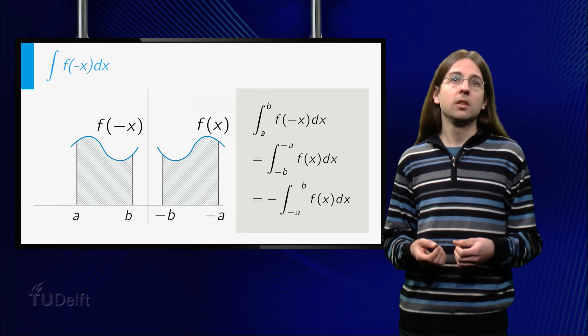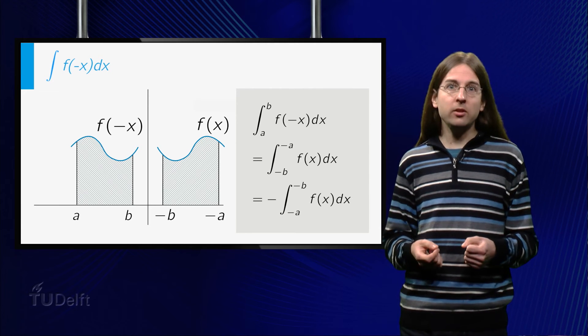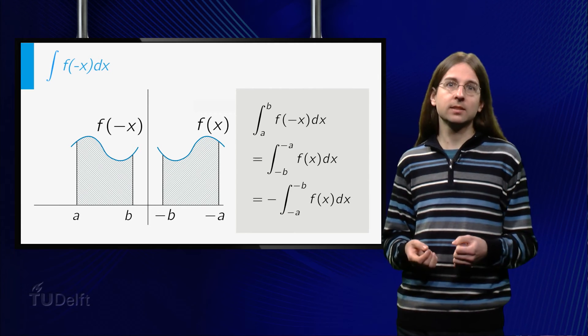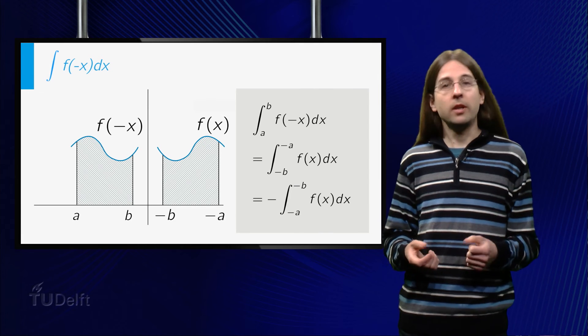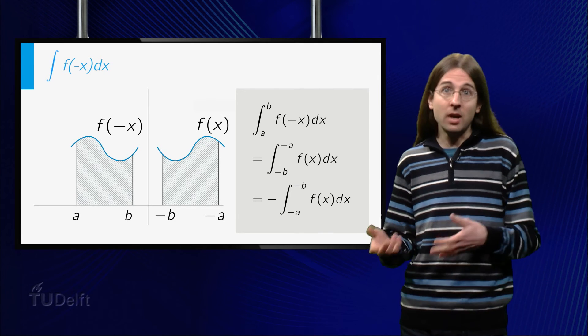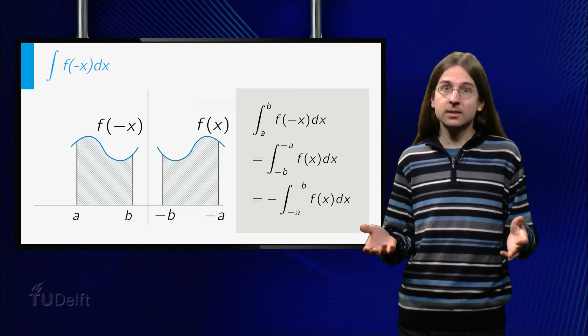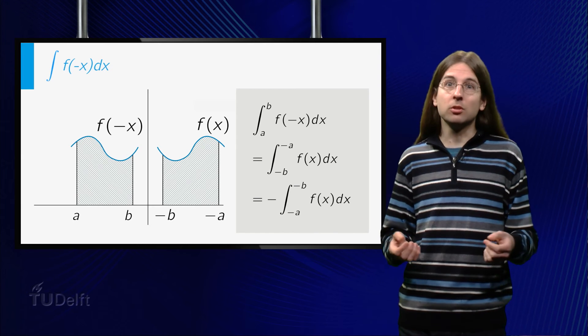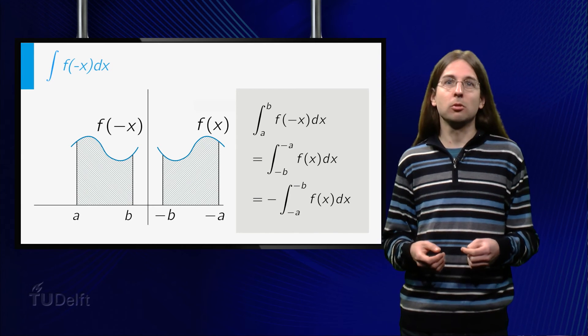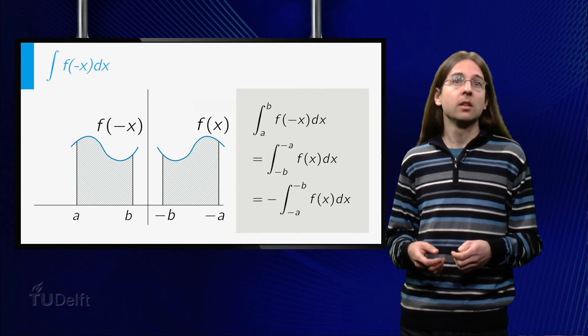As a result, we find that the integral from a to b of f of negative x dx equals the integral from minus b to minus a of f of x dx, which equals minus the integral from minus a to minus b of f of x dx.